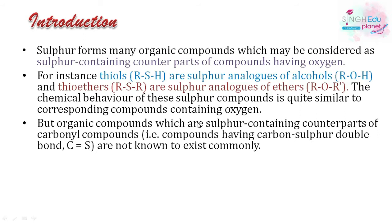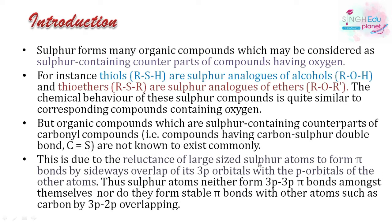We observe that organic compounds with carbon-oxygen double bonds — their sulfur counterparts with carbon-sulfur double bonds do not exist. This is because sulfur has a very large size, and due to the reluctance of large-size sulfur atoms to form pi bonds, sulfur cannot form pi bonds. This is because of the sidewise overlap of 3p orbitals — 3p orbitals cannot overlap with the p orbitals of other atoms. Thus, 3p–3p pi bonds cannot form among themselves, and 3p–2p pi bonds with carbon atoms also cannot form.